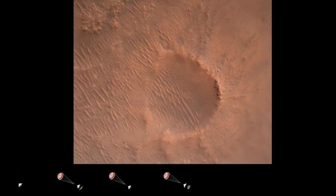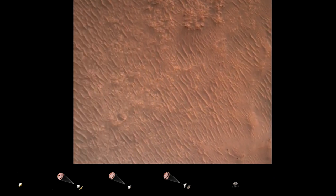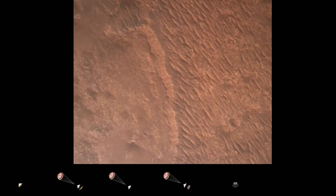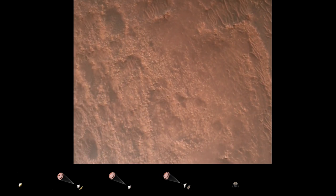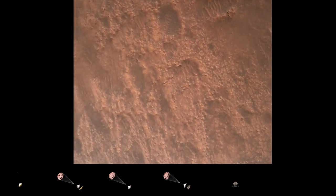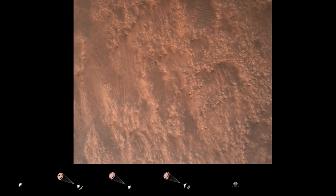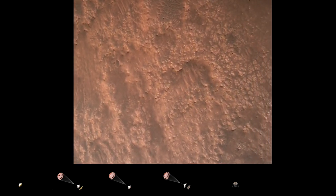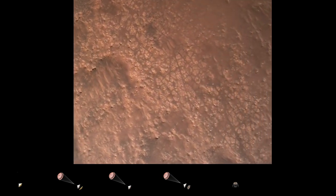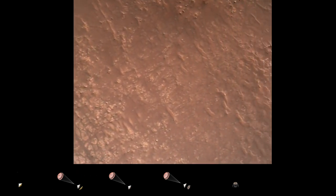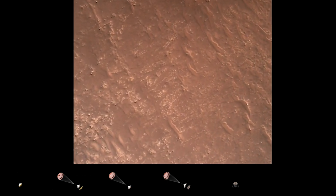We are currently performing the divert maneuver. Current velocity is about 75 meters per second at an altitude of about a kilometer off the surface of Mars. Terrain safety, bravo. We have completed our terrain relative navigation. Current speed is about 30 meters per second, altitude of about 300 meters off the surface of Mars.